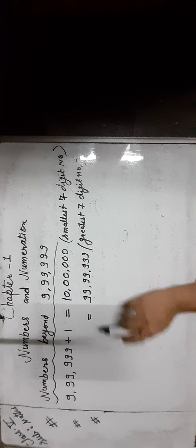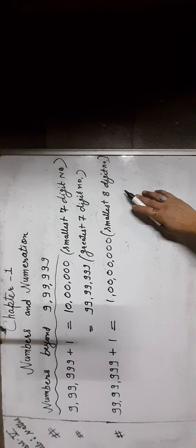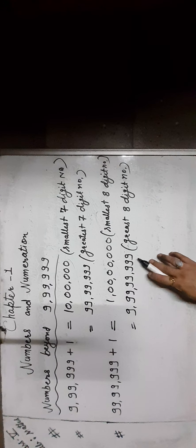The greatest 7-digit number is 99,99,999. If we add 1 to the greatest 7-digit number you will get 1 crore, and 1 crore is the smallest 8-digit number. The greatest 8-digit number is 9 crore 99,99,999.